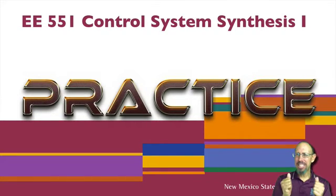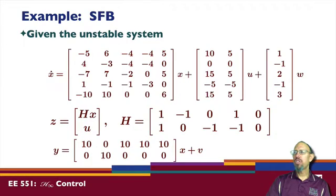Okay, let's look at some practice problems. In this first problem, we're given this unstable system. It's not obvious to look at it, but you can go through and show that this system is unstable. So x dot is equal to ax plus bu plus g times w. H is this matrix. Y is this matrix.